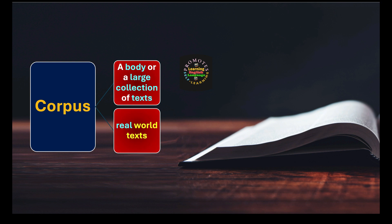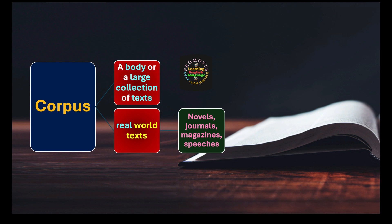Corpus is a body or large collection of texts, and those texts should be real-world texts. When we say real-world texts, it means text generated by human beings in real situations — like those of writers who write novels, authors who write journals, curate magazines, deliver speeches, and so on. They are the real-world texts, real-life experienced texts.